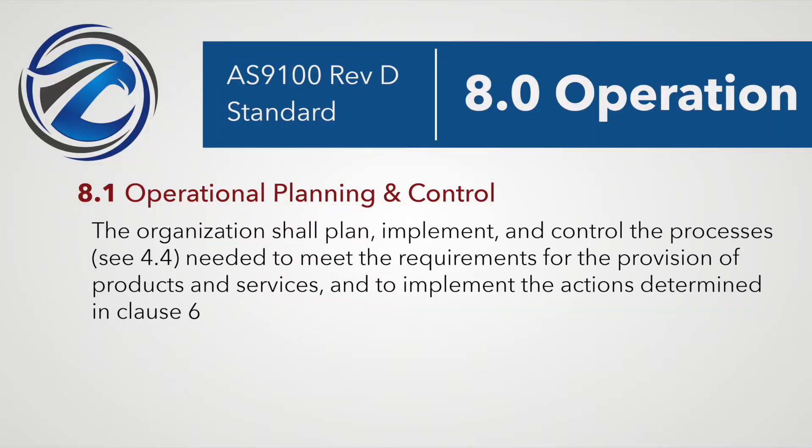What we thought we might discuss is what this standard means and give you a few hints on what might be helpful in putting this together. Before we unpack the requirements in detail, let's look at what 8.1 operational planning and control covers in general. In AS9100 Rev D, 8.1 states a purpose and two main clauses and four sub-clauses. So 8.1 says: the organization shall plan, implement, and control the processes — clause 4.4 — to meet the requirements for the provision of products and services and to implement the actions determined in clause 6.